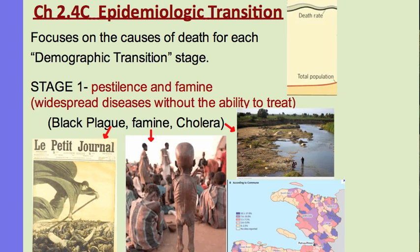For the epidemiological transition stages, these are the causes of death for each of the demographic transition stages. Epidemiology comes from the branch of science concerned with epidemics and widespread diseases — it is the study of large numbers of people and the diseases they might have.